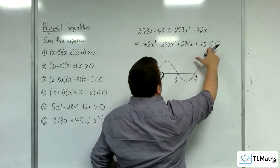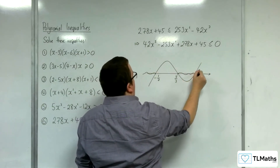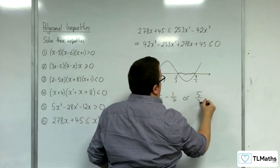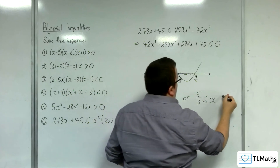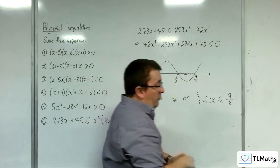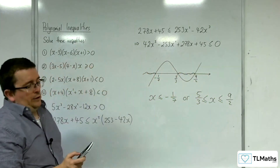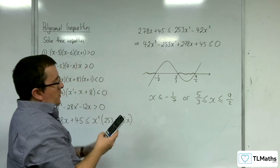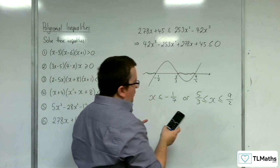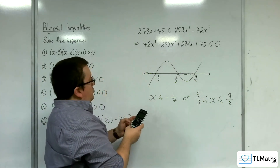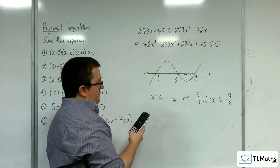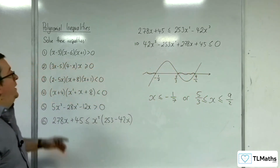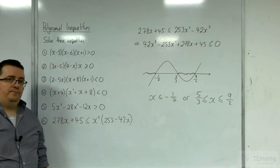Where is the cubic below or equal to 0? That's there and there. So x is less than or equal to minus 1 seventh, or x is greater than or equal to 5 thirds but less than or equal to 9 halves. We'd definitely want to double-check that using the cubic inequality solver — less than or equal to is option 4. Enter 42, minus 253, 278, and 45, and we get precisely what we have there. That's how we can solve cubic inequalities.